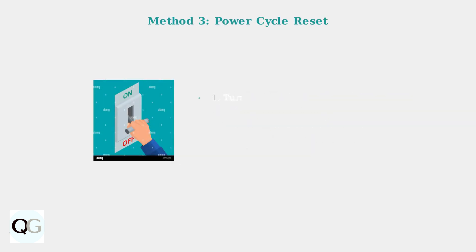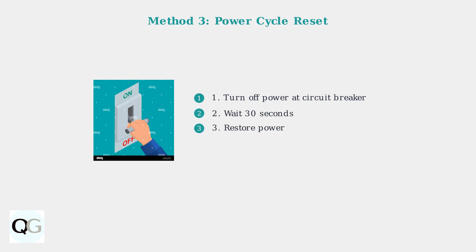Method 3 is Power Cycling. Turn off power to the camera at your home's circuit breaker. Wait 30 seconds, then restore power. This method helps with firmware issues. If power cycling alone doesn't resolve the issue, combine it with the hardware reset method for more persistent problems. This combination is effective for firmware corruption.